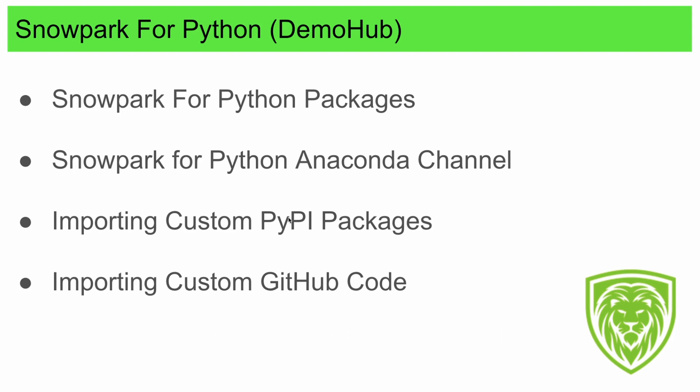In those cases, you might run into a limitation. But if it's a truly native Python package, you can bring that in and we're going to see an example. We're also going to see how to take code from GitHub, GitLab, or your favorite SCM and bring that code down so you can use it in a collaborative way within Snowpark for Python. Being able to reuse logic from the community is an exciting capability.